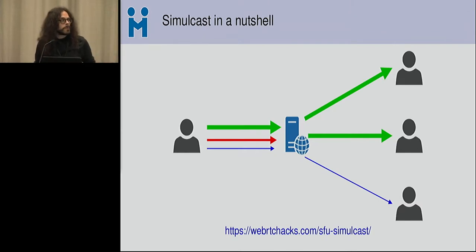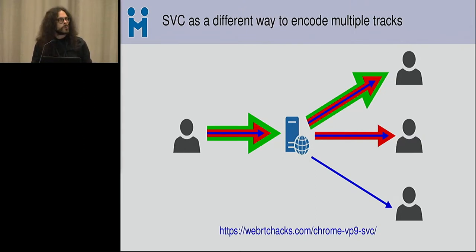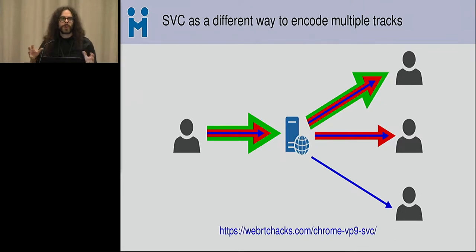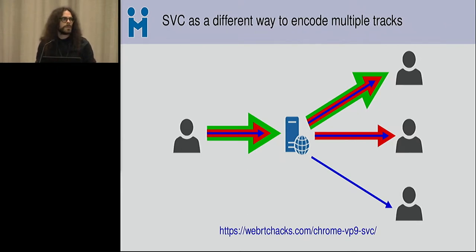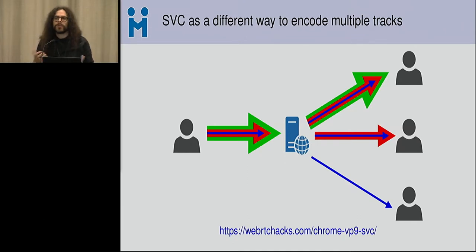SVC tries to solve the same problem but in a very different way. You don't have three completely separate streams; instead there are two different layers of the same single stream. Think of those three nested arrows as an onion, with different layers wrapped around each other. The SFU just strips one layer or another to send less data to users while still giving them something meaningful they can decode. Three different users can be subscribed to the same stream but each receive a different quality level.